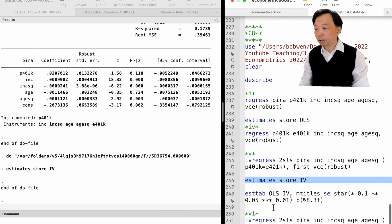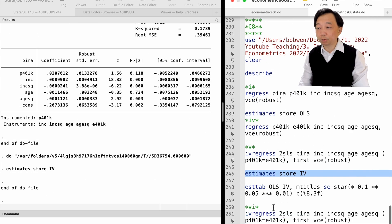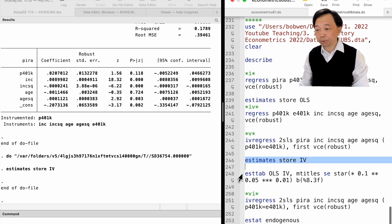In Stata, we can store the results for each regression using the estimates store command. We give a name for each model. Then we use the estab command to show the results in the table. We type estab, followed by the names of the models. After the comma, we write the options for the table. Here, I show the standard errors of the estimates and change the significance level of the stars.